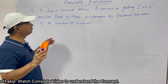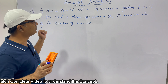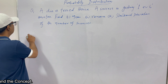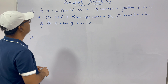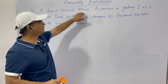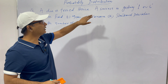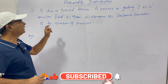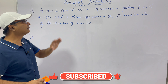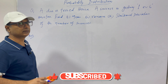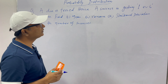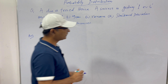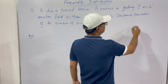If you are able to solve it, write the answer in the comment box so that I know you solved it by yourself. Now I am starting. The question is: a die is tossed thrice. A success is getting one or six on a toss. Find the mean, variance, and standard deviation of the number of successes. How will we get the probability distribution?